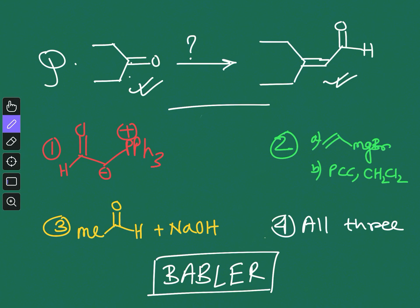If you look carefully, option 1 is the Wittig reaction condition, which in theory can give this product. Similarly, in option 3 you can see an aldol reaction between this aldehyde and this ketone can also give this compound. Option 2 is actually the Babler oxidation, which will also give the same compound.